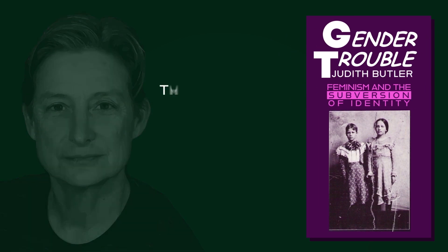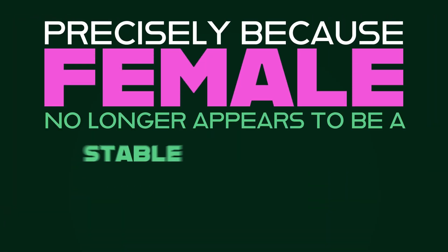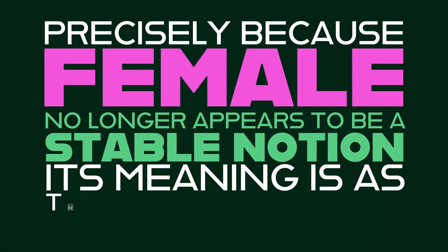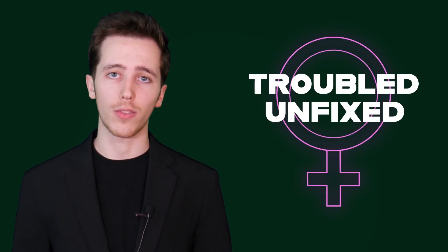In her 1990 book Gender Trouble, queer theorist Judith Butler argued that the category of female was no longer reliable. Quote: 'precisely because female no longer appears to be a stable notion, its meaning is as troubled and unfixed as woman,' unquote. Of course, Butler does not give us any evidence to back up such a statement. One might wonder how female is an unstable category, or how the meaning of woman is troubled and unfixed — like Butler's sense of reality.